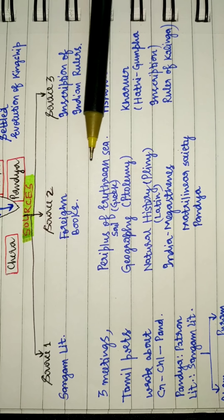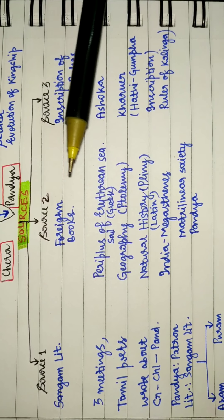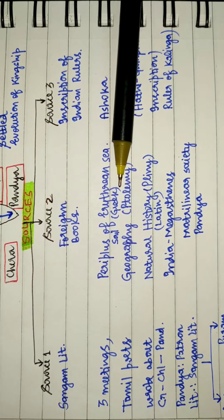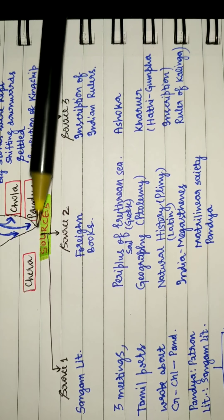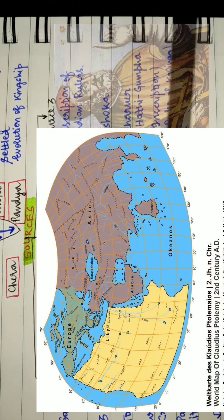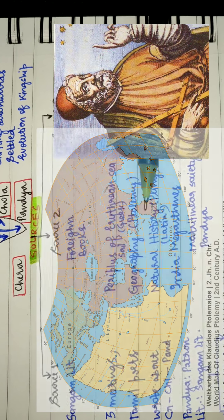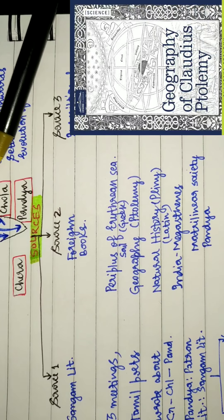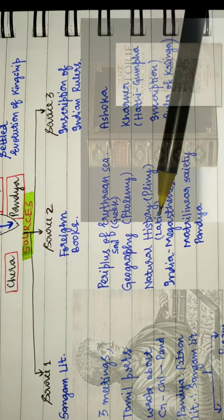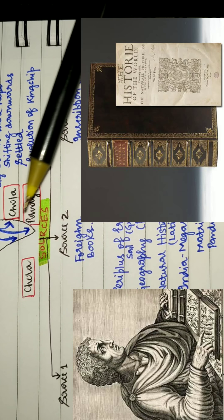Periplus means sailing around the Red Sea. It was written in Greek. There we find mentioning of these three names. Geography written by Ptolemy mentions Chera, Pandya, and Chola. Natural History written by Pliny in Latin language also mentions Chera, Pandya, and Chola.